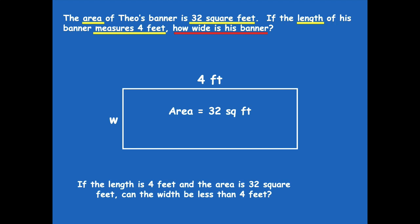If the length is 4 feet and the area is 32 square feet, can the width be less than 4 feet? Think about it — if one side of the rectangle is 4 feet, can the other side be anything less than 4 and still get a total of 32 for the area? We just multiply length times width to find area. The highest result with 4 on one side would be 4 times 4, which is only 16. So we can't have the width be less than 4 — that would be less than our total area of 32 square feet. Our width has to be greater than 4.